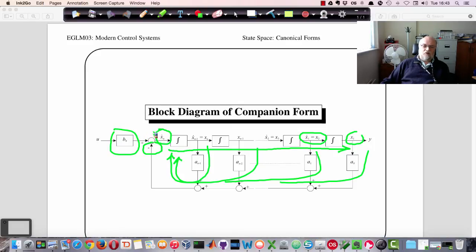So this summing point represents, the output of that summing point represents the actual differential equation. And all these other integrals are just there to define the phase variables. All the way down from the nth phase variable all the way down to x_1, which is equal to the output of the system.